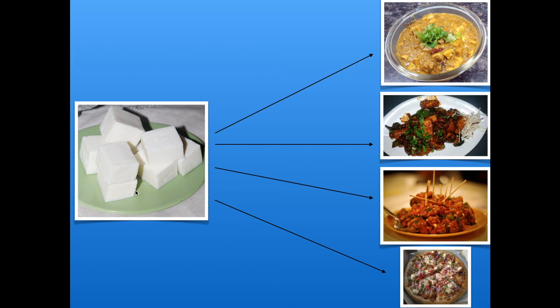We can say there are two types of people: one who is working with the common thing and one who is making something specific using that common thing. I gave you this example because I want you to be familiar with these two words — common and specific.